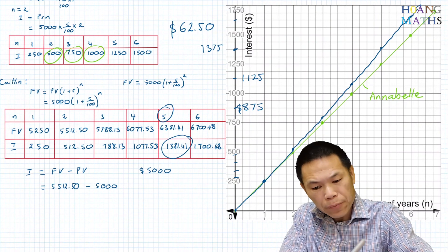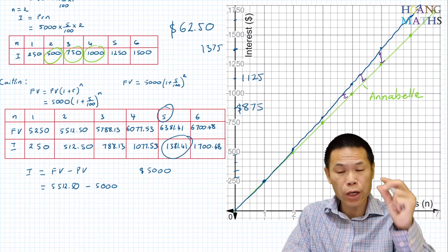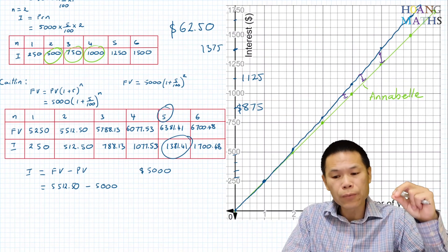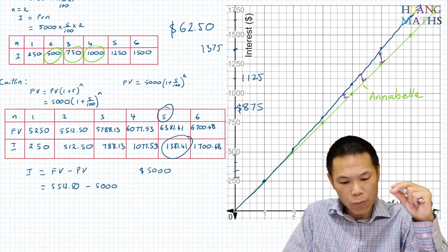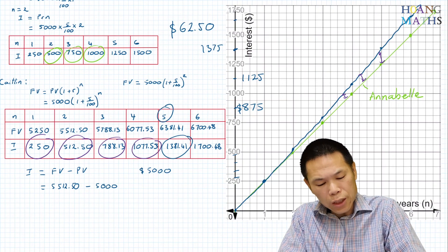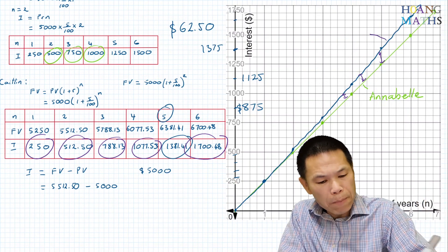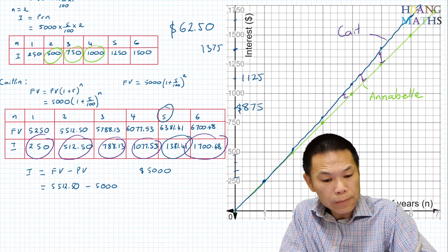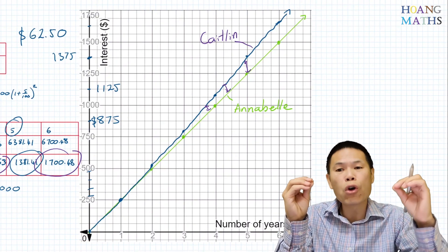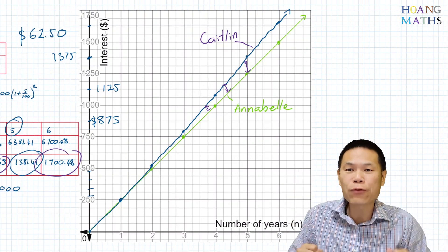You can see as time goes by, the gap between the two graphs is getting wider, simply because it's compound interest — the interest helps Kaylin grow more interest. Whereas Annabelle's interest is constant, going up by $250 every year. Kaylin's interest grows more and more each year, so her graph is an exponential curve, not a straight line. Thank you so much for watching. Bye.